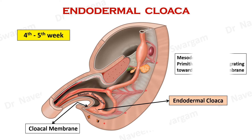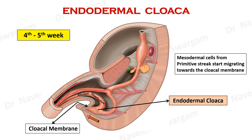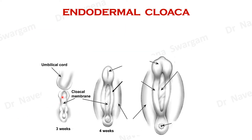The mesodermal cells from the primitive streak at the caudal surface of ectoderm start migrating towards the cloacal membrane around the tail end of the embryo. Here is the ventral view of cloacal membrane which is covered by ectodermal layer.